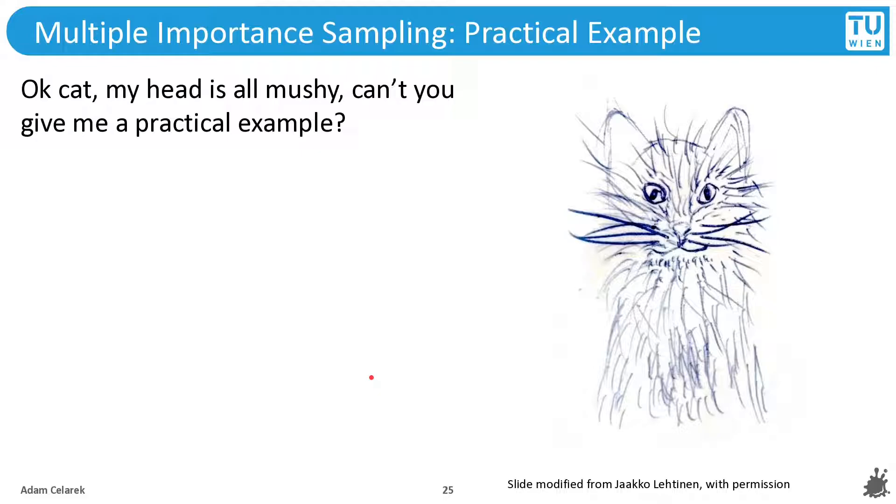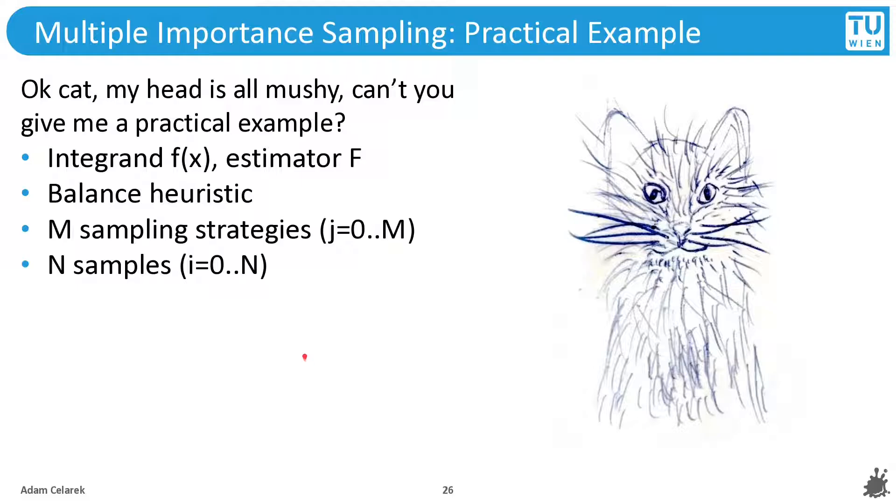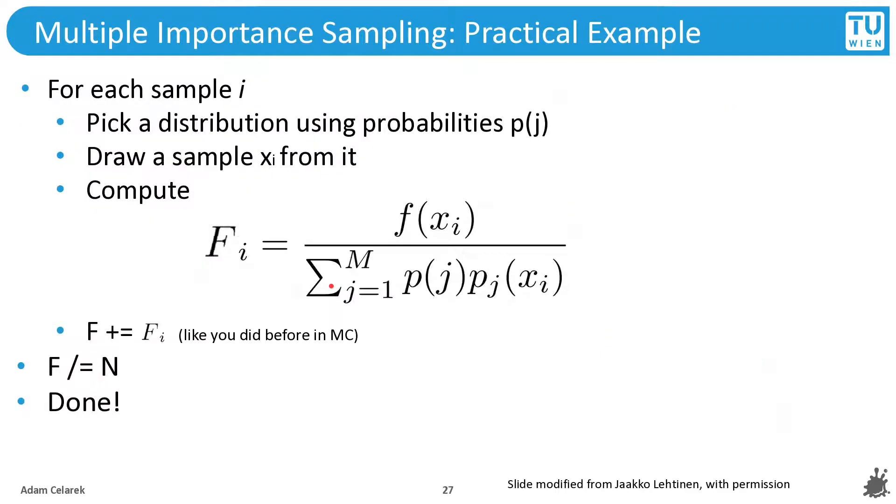Cat, my head is all mushy. Can't you give me a practical example? Yes, I can. So we will have an integrand f(x) and several estimators f. We use the balance heuristic. We have m sampling strategies and n samples.